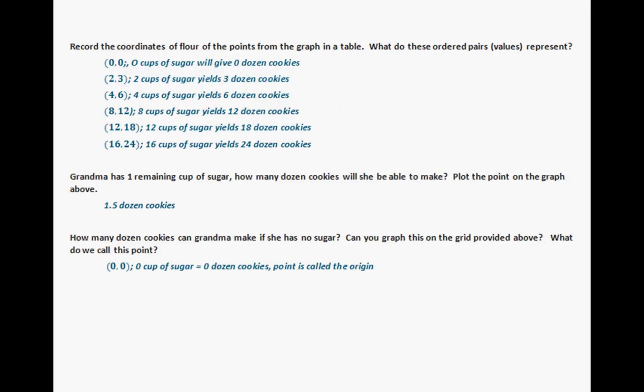For questions A through C, record the coordinates from the graph in the table. You can pick coordinates including zero comma zero — representing zero cups of sugar yielding zero dozen cookies; two cups of sugar gives three dozen cookies; four cups of sugar gives six dozen cookies, and so on.